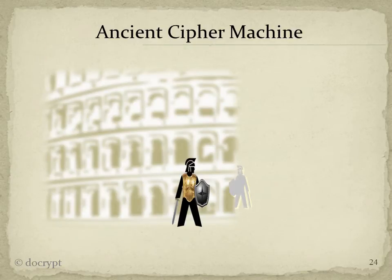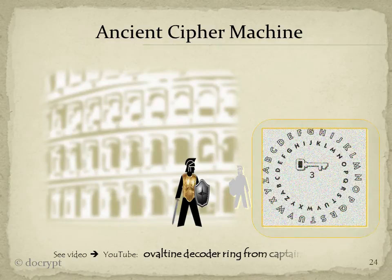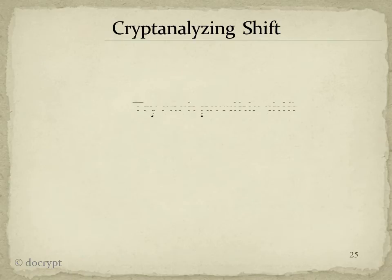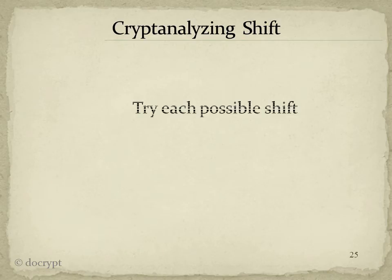So you can have some centurion carry around a bunch of tables for you. Or, if you're very fortunate, you can get an Ovaltine decoder ring — find the link here at YouTube. There is more on these decoder rings at the end of chapter 2 in our book. This may have been a pretty secure method when most people had a real tough time reading. But, in the meantime, cryptanalyzing is really pretty easy.